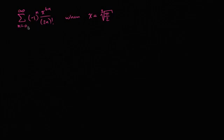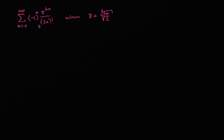I have an infinite series here: the sum from n equals zero to infinity of negative one to the n power, times x to the sixth n over two n factorial. My goal in this video is to evaluate this power series when x is equal to the cube root of pi over two.